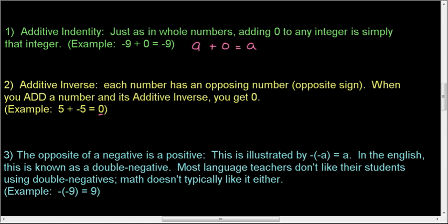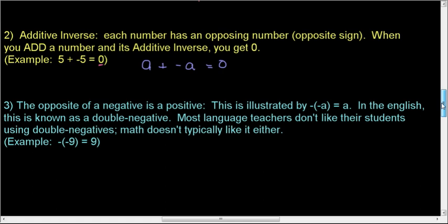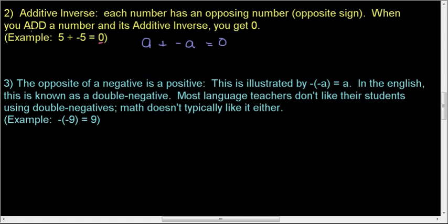So in general terms, if you take a number, it doesn't matter whether the number is positive or negative, and you add its opposite, you get 0. This applies to any number. If A was negative 3, that brings us to property 3. Let's go ahead and do property 3, and we'll come back and take a look at another example for property 2.